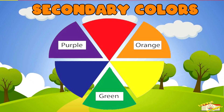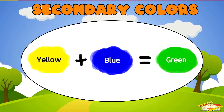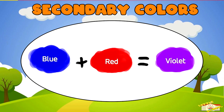Secondary colors. Secondary colors are made by mixing two primary colors. Examples of these secondary colors are: red plus yellow equals orange, yellow plus blue equals green, and blue plus red equals purple.